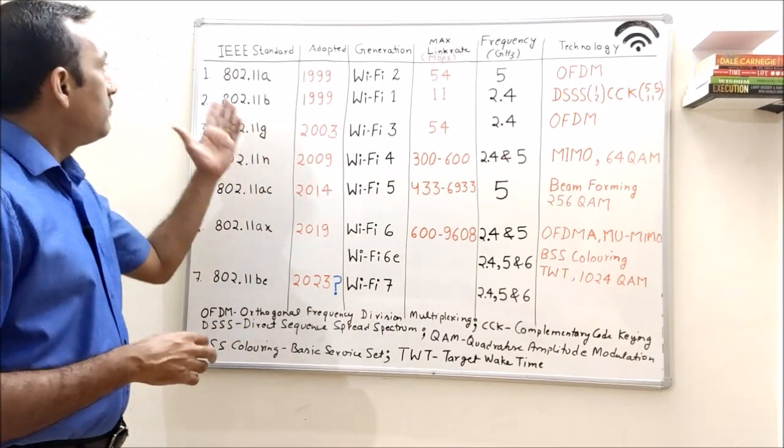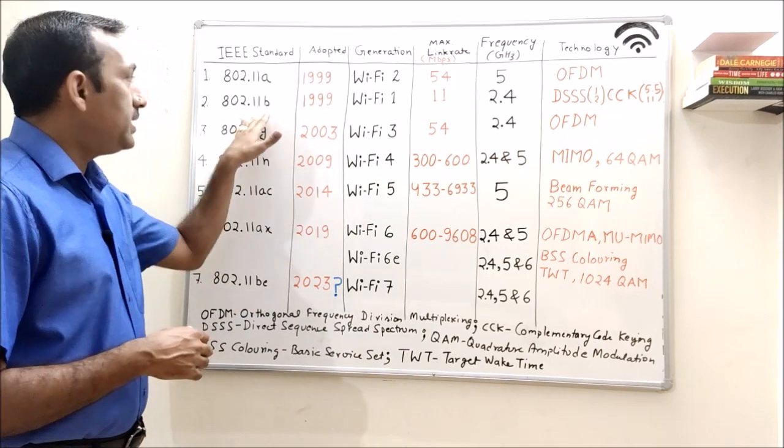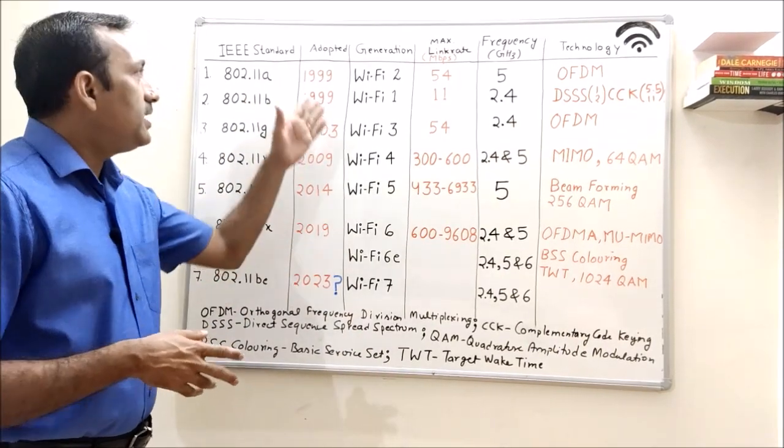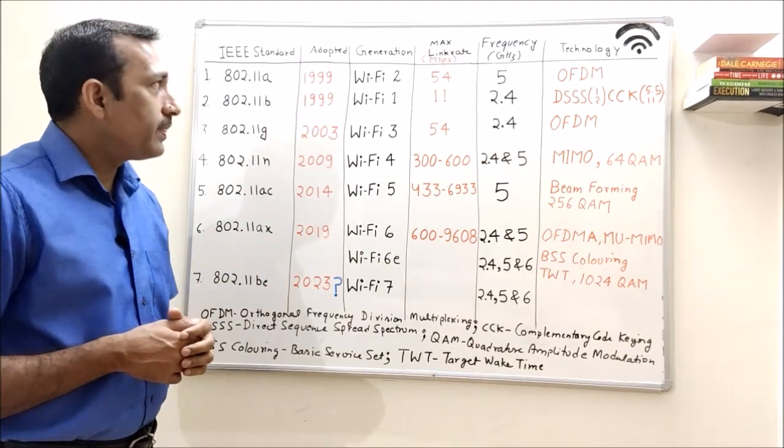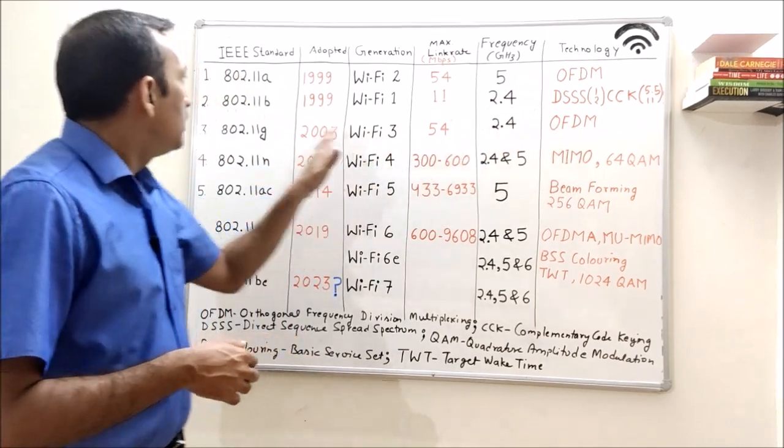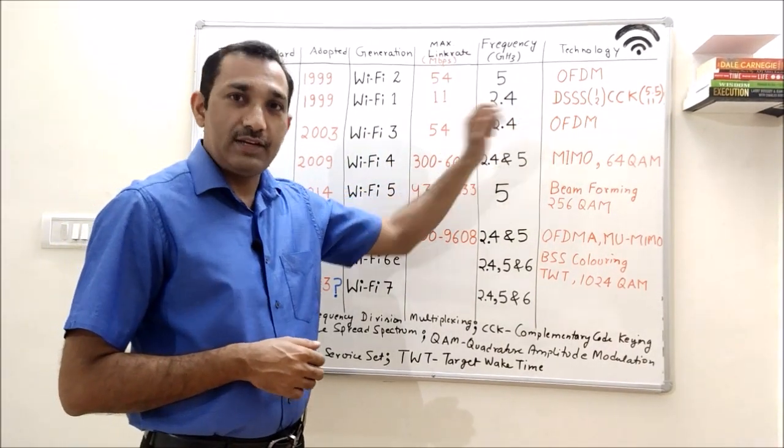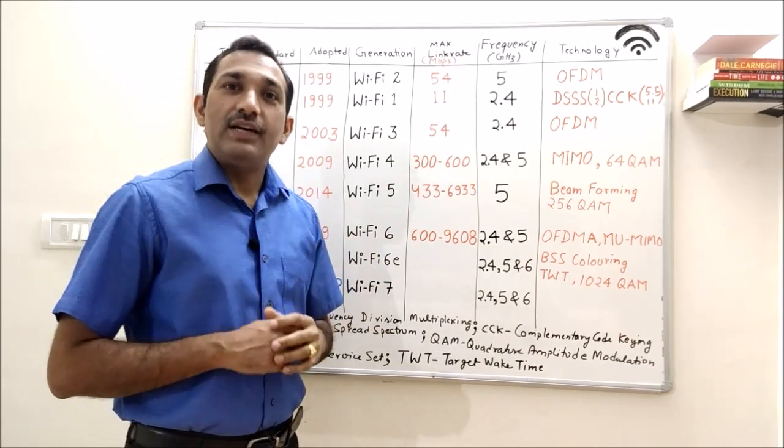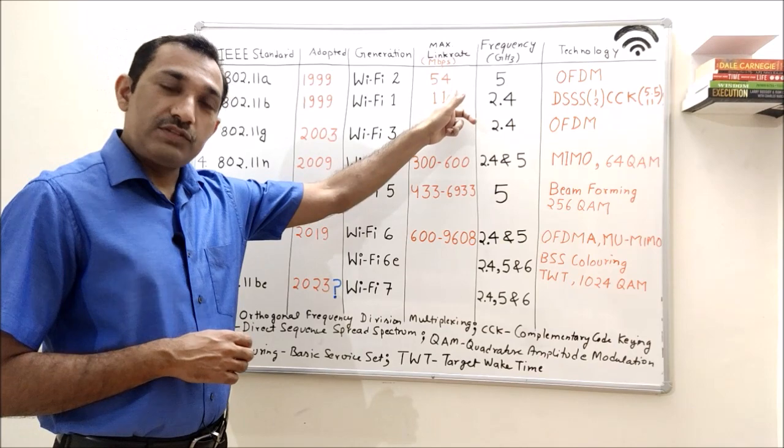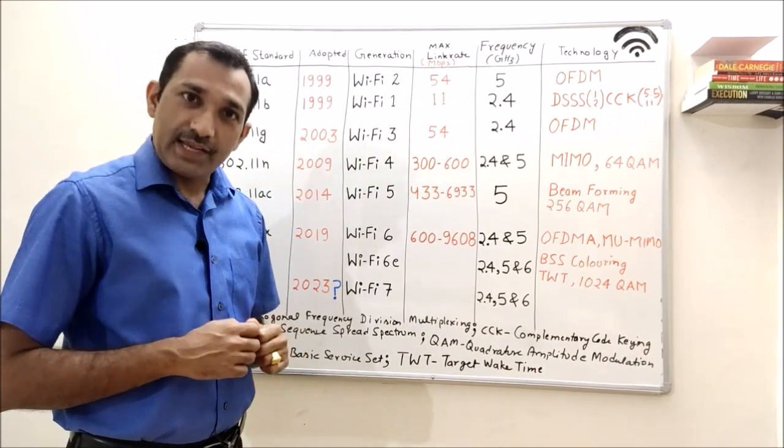The first standards were 802.11A and B. These were the two first standards which were adopted in 1999. A was working on 5 GHz band while 11B was working on 2.4 GHz. 5 GHz clearly had an advantage of higher throughput which was 54 Mbps.